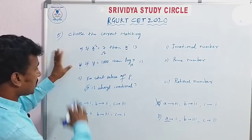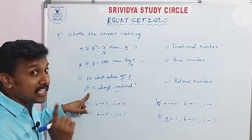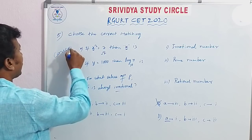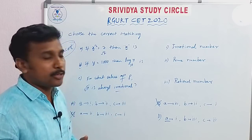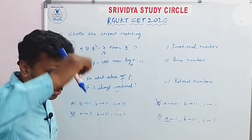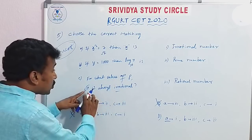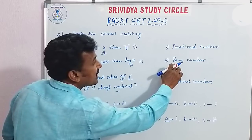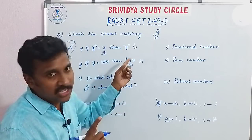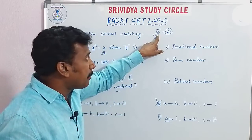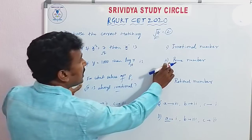For what value of P is root P always irrational? Concept, friends. Root P is irrational when P is a prime number — compulsory prime. For example, root 4 is not irrational because 4 is not prime — root 4 equals 2, which is rational. If the number P is a prime number, root P is irrational. Public exam, main exam — 60 to 70% is concept based.